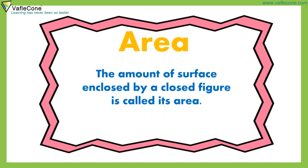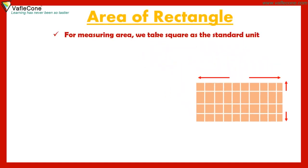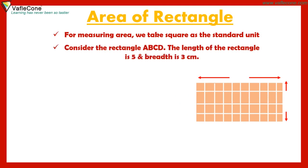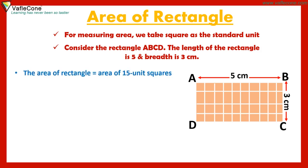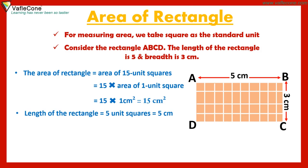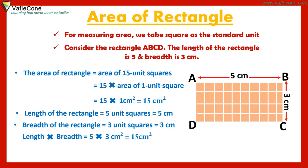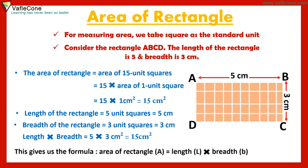Area: The amount of surface enclosed by a closed figure is called its area. For measuring area, we take a square as the standard unit. Consider rectangle ABCD with length 5 cm and breadth 3 cm. The area equals 15 unit squares, and length into breadth = 5 x 3 = 15 cm². This gives the formula: area of a rectangle A = length L into breadth B.